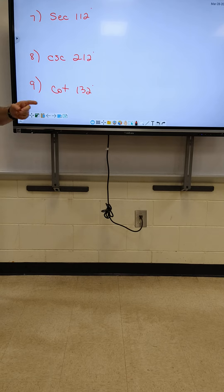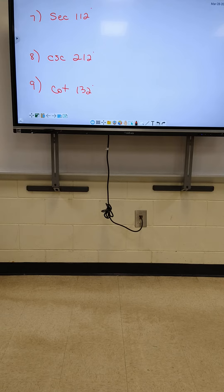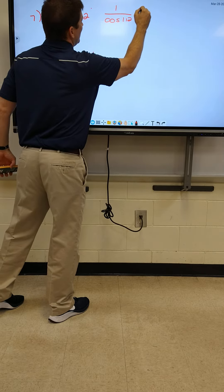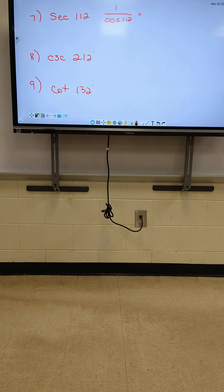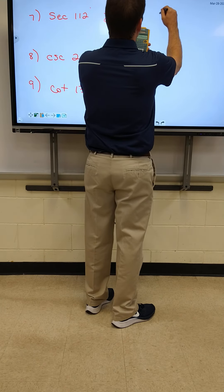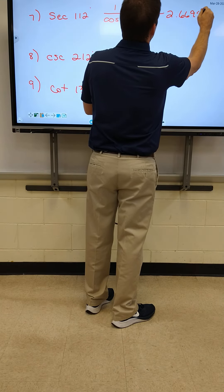Here's how we're going to have to do it. There's not a button for secant, but there is a button for the inverse. We're going to do it with cosine instead of secant. You'll do 1 over cosine of 112 — that's the same as punching in secant. Since we don't have a button for secant, you've got to use the inverse, which is cosine, and you do it that way. I got negative 2.6695.